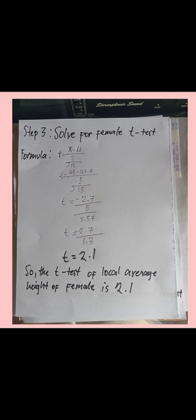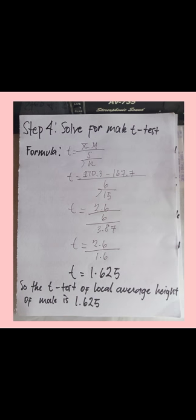Step 4: Solve for the male t-test. The formula is: t = (sample mean − population mean) / (standard deviation of the sample / square root of sample size). So, t = (170.3 − 167.7) / (6 / √15) = 2.6 / (6 / 3.87) = 2.6 / 1.6, so the male t-test is equal to 1.625.